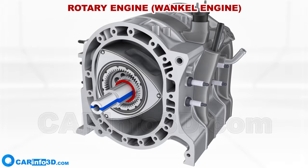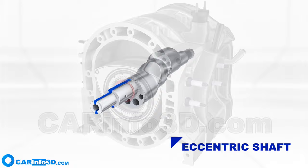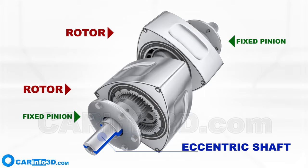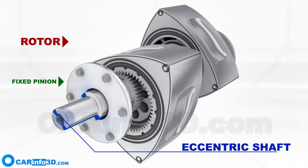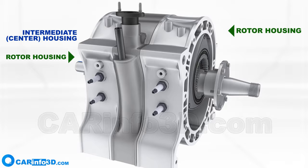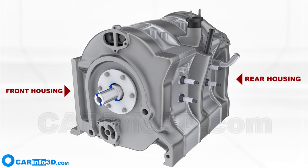They are replaced by the following major parts: the eccentric shaft, rotors which function as pistons, and fixed pinions which determine the direction of the rotors. The engine itself is made up of an intermediate center housing, rotor housings forming working chambers, and front and rear housings that seal the working chambers and serve as the framework for the fixed pinions.